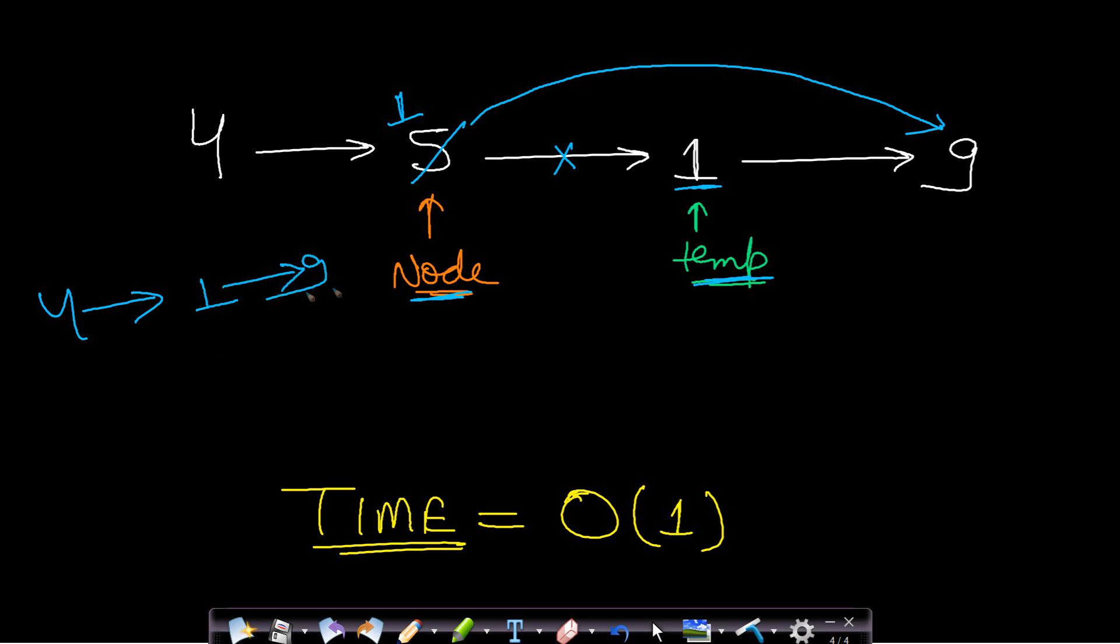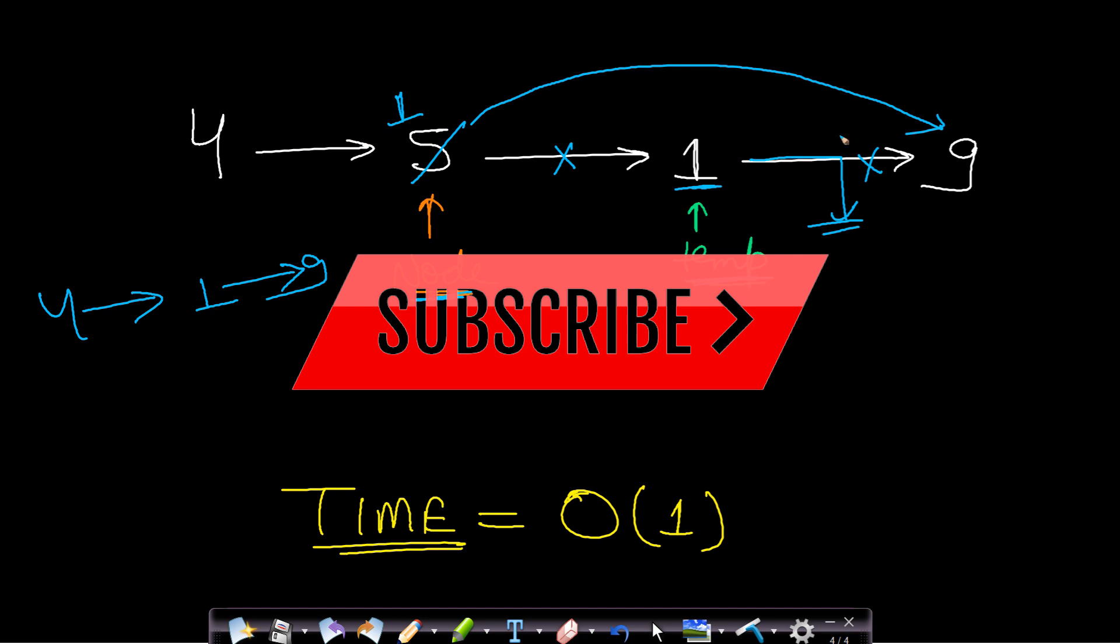But it is always a good practice to remove the next pointer of these type of nodes. So we have taken this temporary variable and we will make the next of temporary variable equals to none, so this will be gone and now your linked list is just 4-1-9. This will just take order of one time.